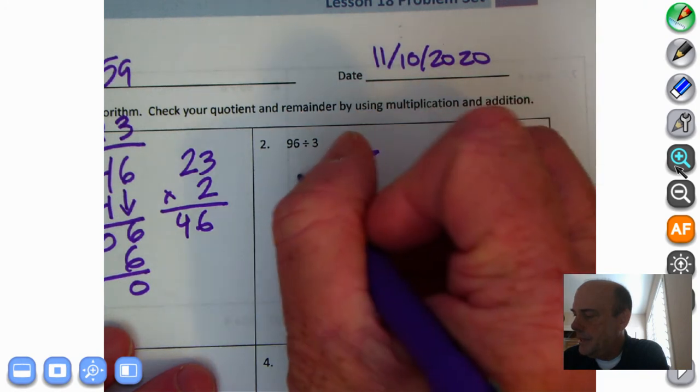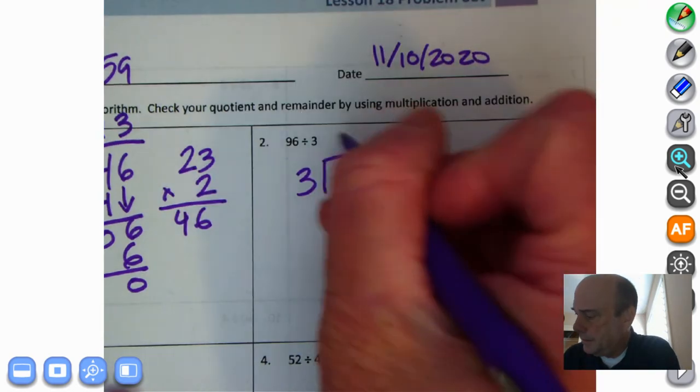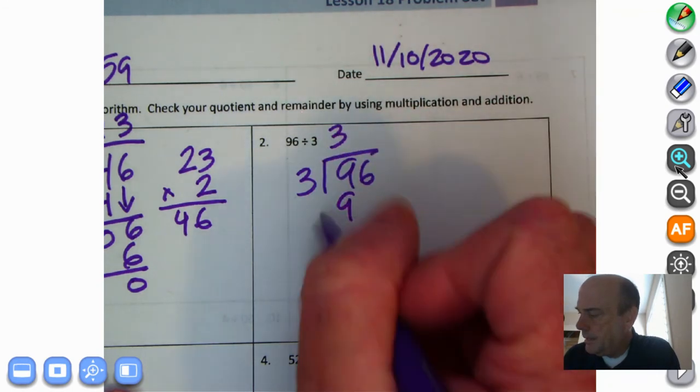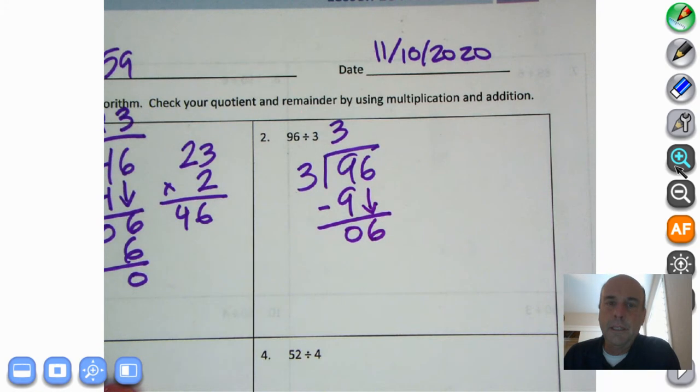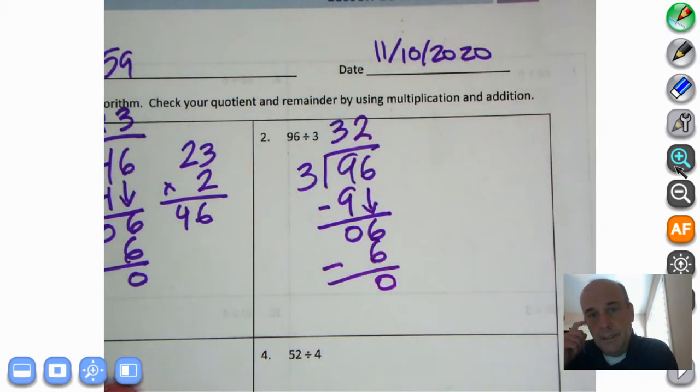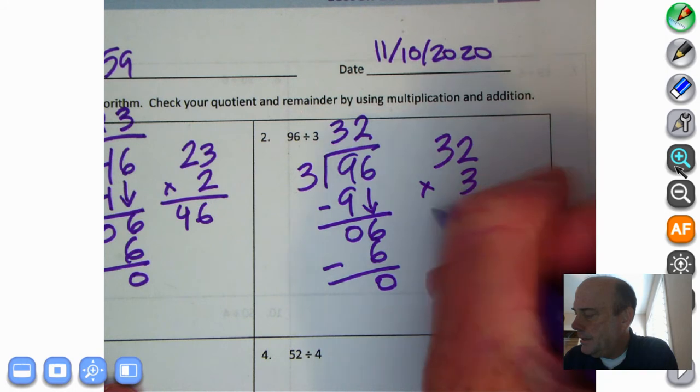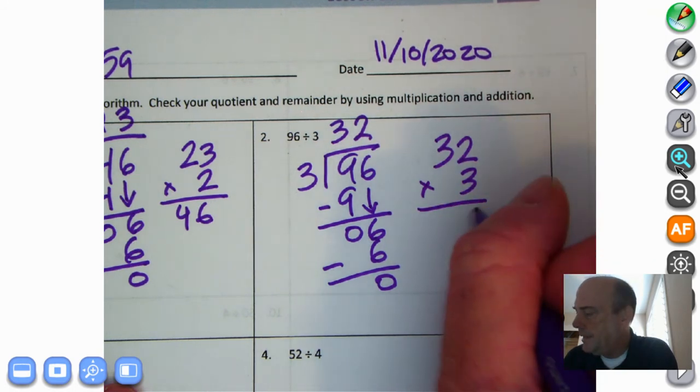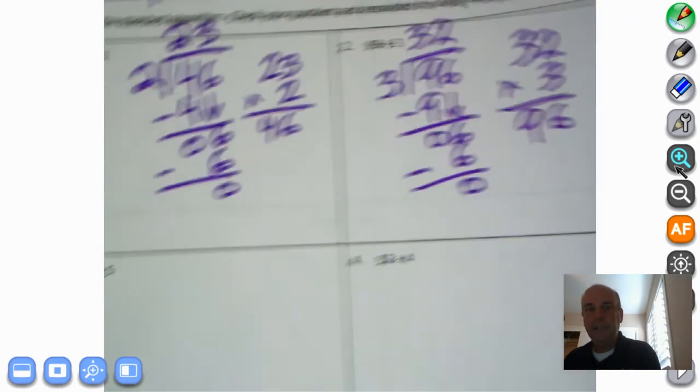Continue on. 96 divided by 3. 3 times 3 is 9. So I'm going to put a 3 here and a 9 down there. We're going to subtract. We get 0. Bring down the 6. How many 3s in 6? 3 times 2 is 6. Subtract again and 0. Let's check using multiplication. 32 times 3. 2 times 3 is 6. 3 times 3 is 9. Got that?